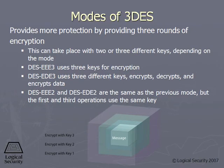3DES works and our trip — this works in different modes. If you see EEE (E-E-E), that means encrypt, encrypt, encrypt with three different keys. If you see EDE (E-D-E), that means encrypt, decrypt, encrypt.